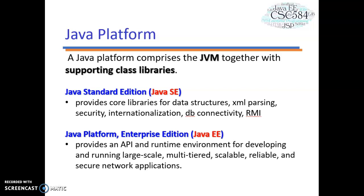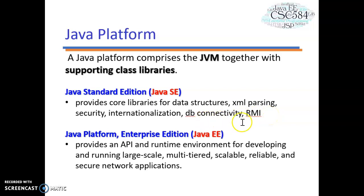There are four platforms of the Java programming language. The first one is Java SE. When most people think about the Java programming language, they think about Java SE — this is the core API. It provides core libraries for data structures, XML parsing, security, internalization, and database connectivity together with RMI.